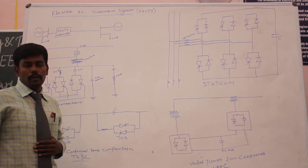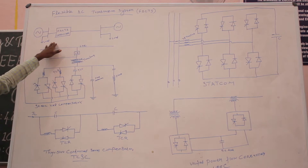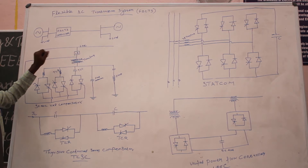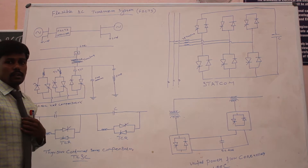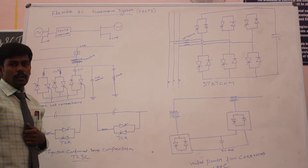Here I have the basic lab diagram of the FACTS control devices. Here I have the transmission line and here I have the FACTS controller. From the types of FACTS control devices, these are: shunt controller, series controller, a shunt and series combined controller, and a series-series controller.